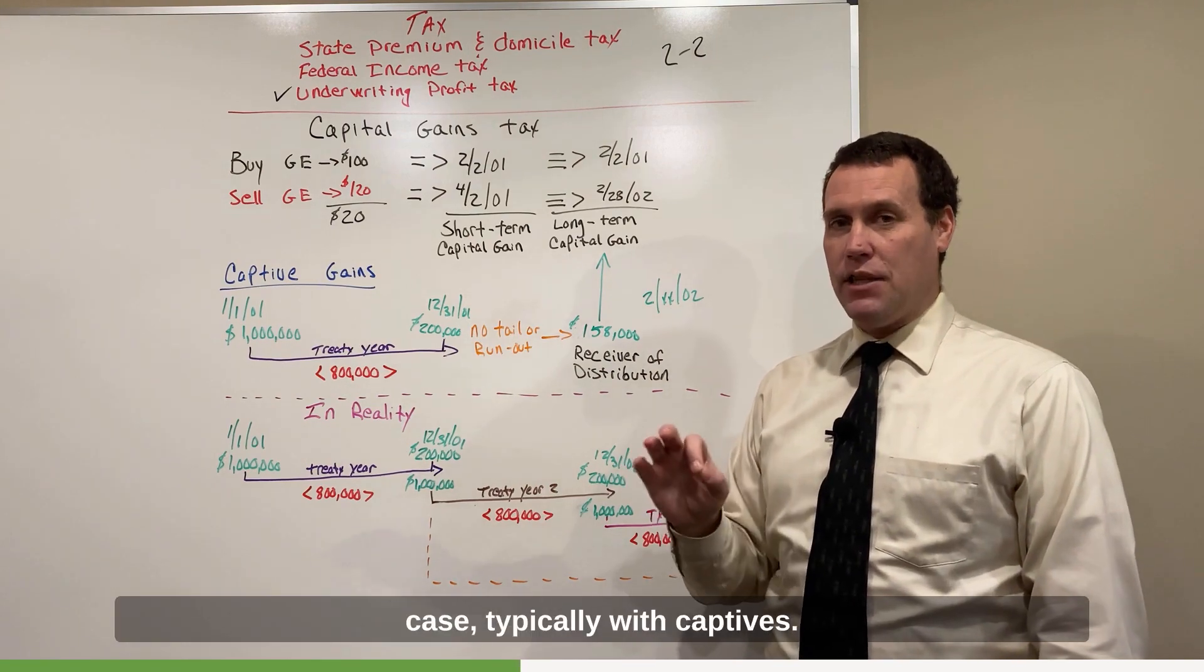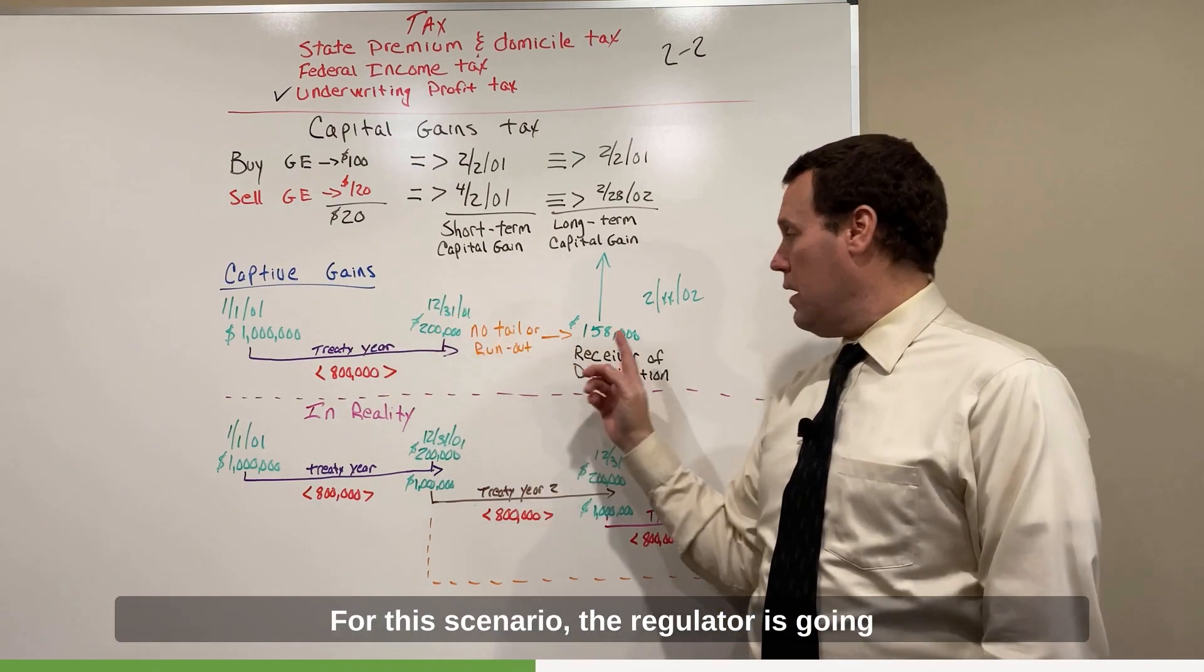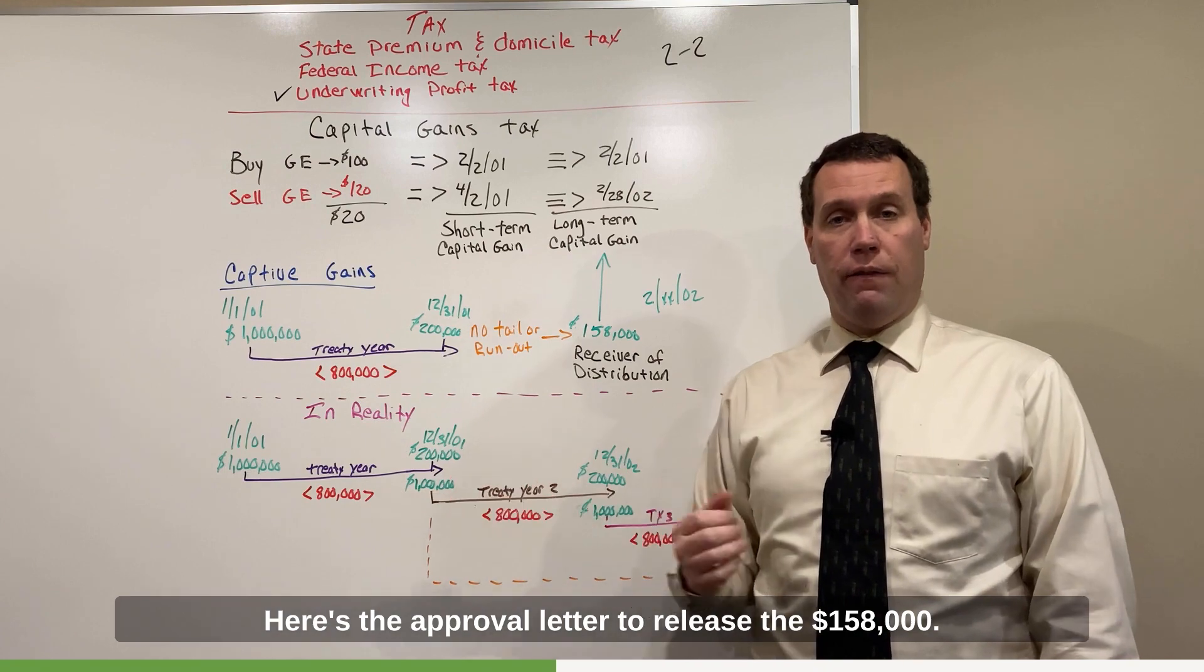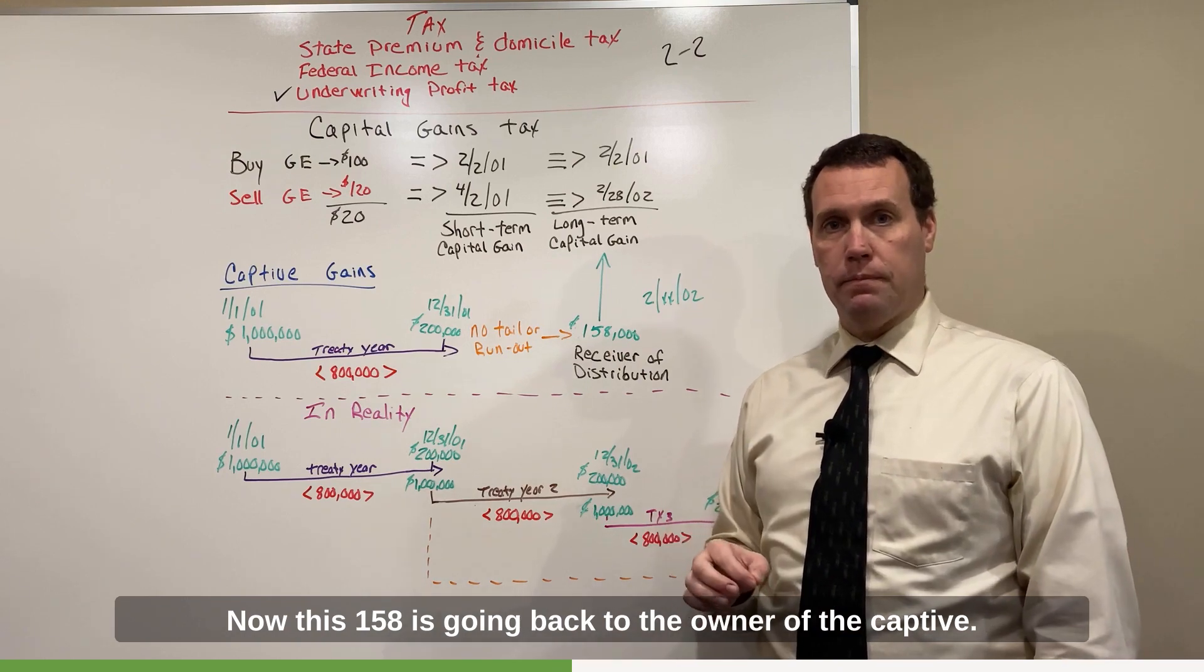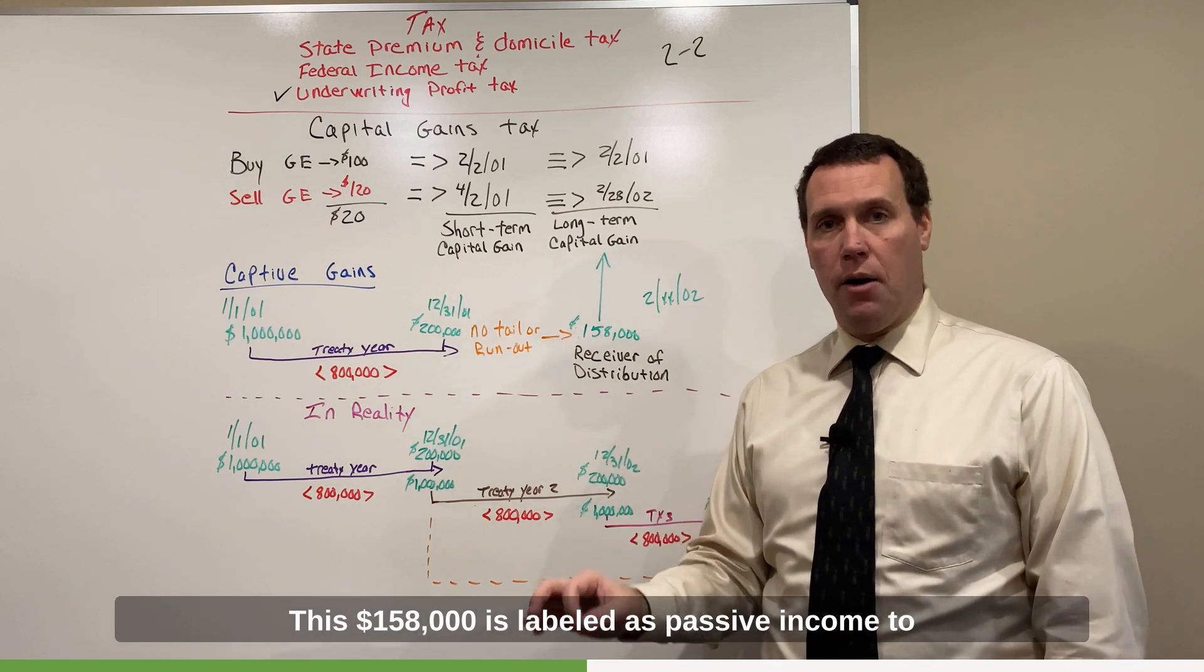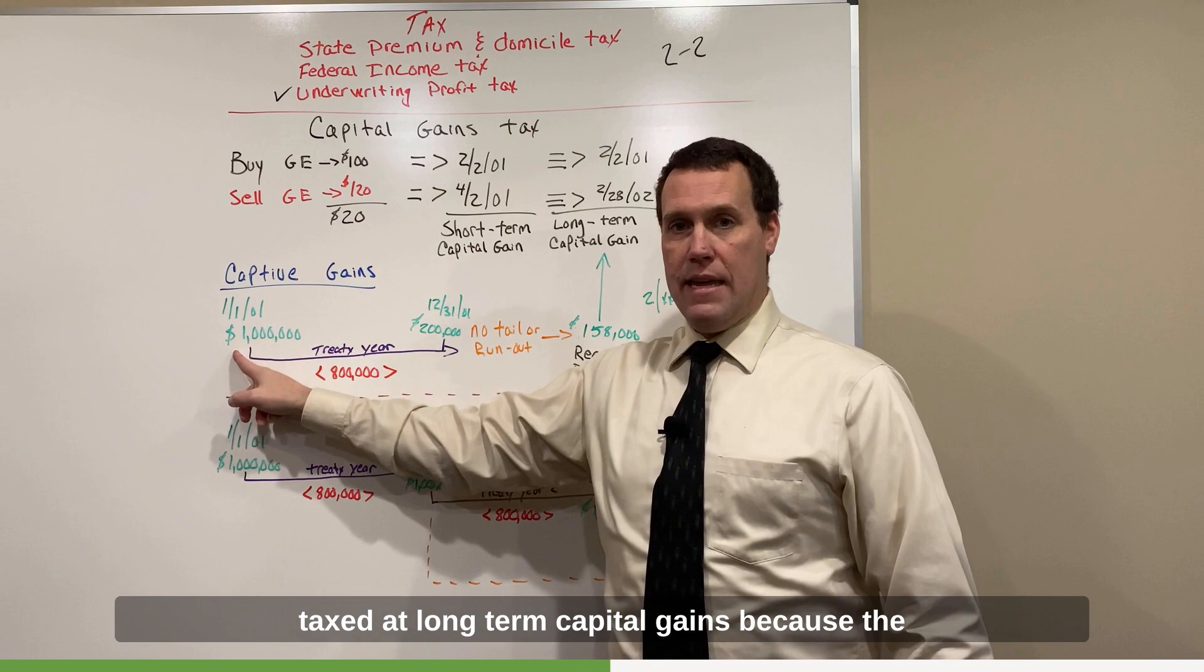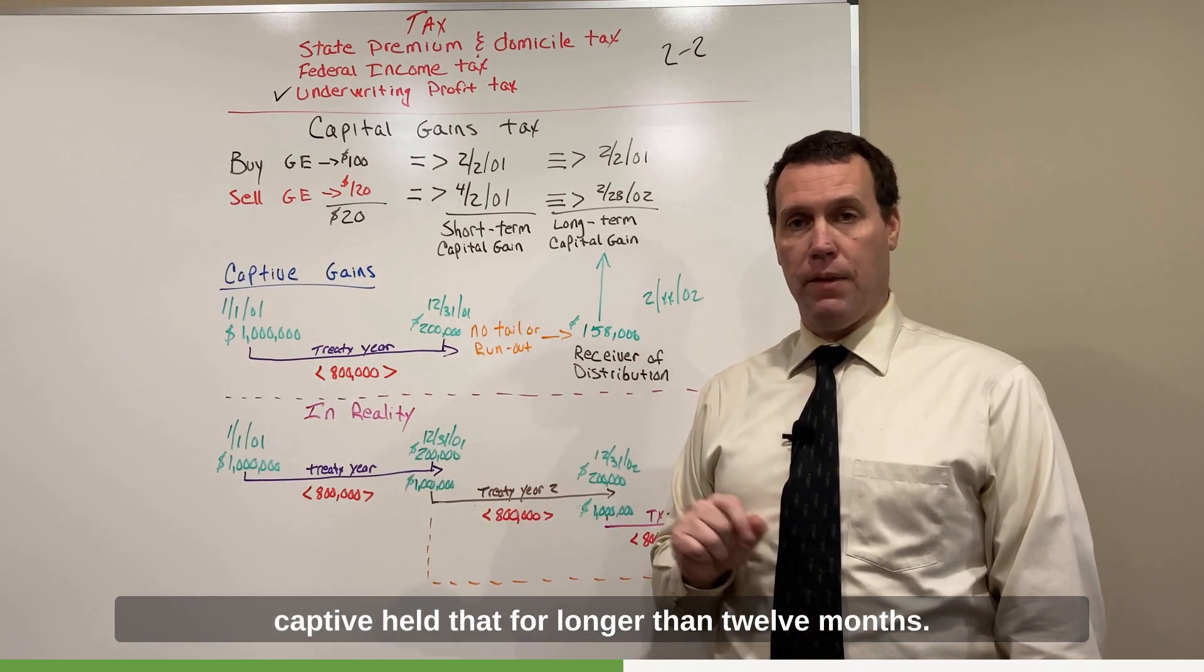But that's usually not the case typically with captives. So let's just assume that that's the case for this scenario. The regulator is going to say, okay, you're liquidating your captive. Here's the approval letter to release the $158,000. Now this $158,000 is going back to the owner of the captive. This $158,000 is labeled as passive income to the owner of the captive and is therefore taxed at long-term capital gains because the captive held that for longer than 12 months. That's the trigger.